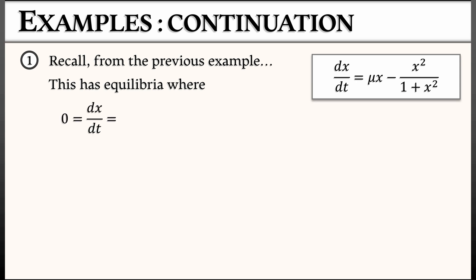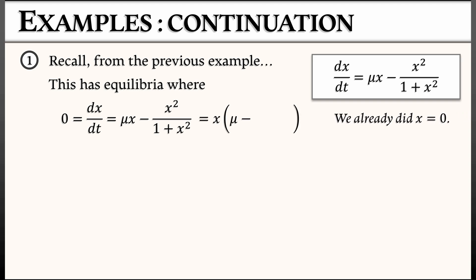Set that right-hand side equal to zero, and then factor out the x. What is left over is the quantity mu minus x over 1 plus x-squared. That means we also have equilibria where mu equals x over 1 plus x-squared.